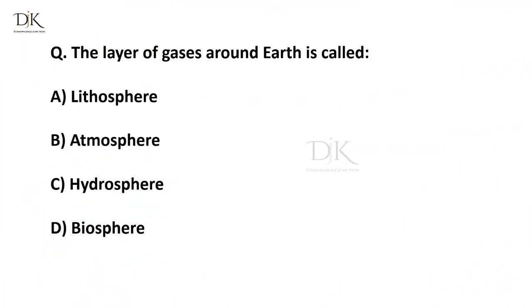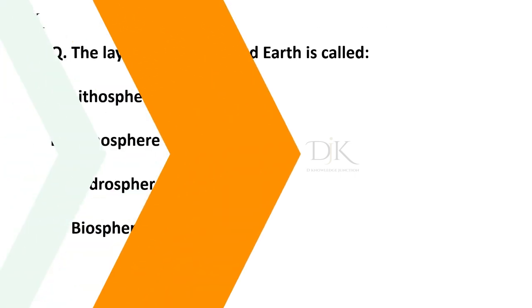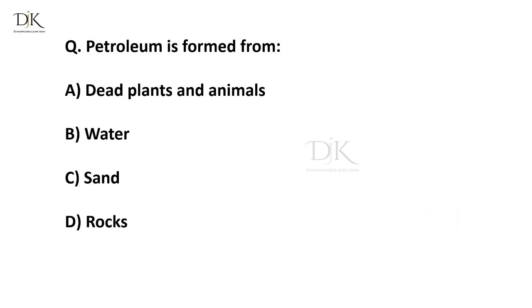The layer of gases around earth is called... Right answer is atmosphere. Petroleum is formed from... Right answer is dead plants and animals.